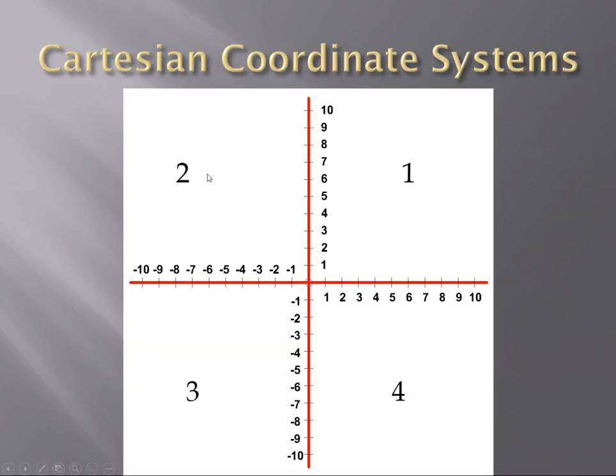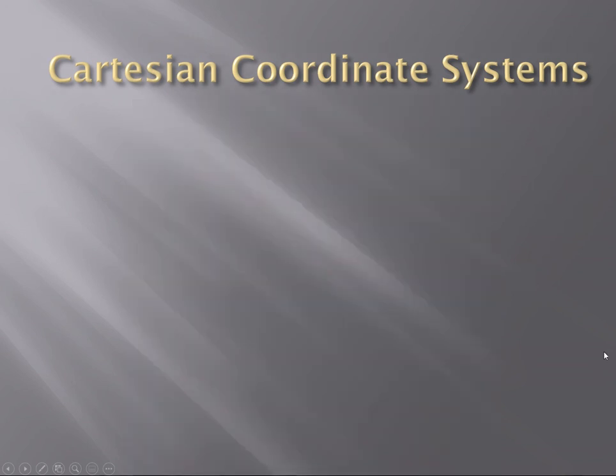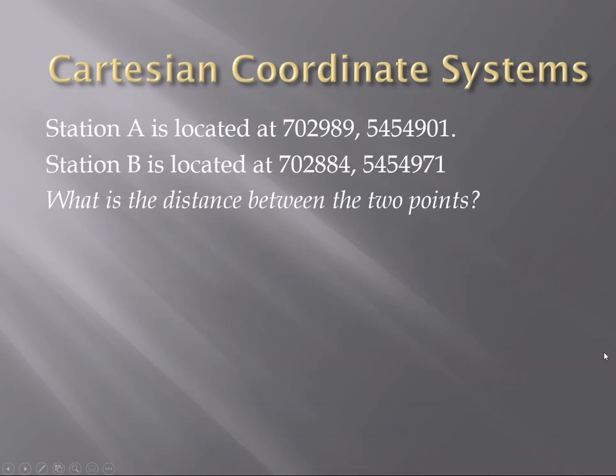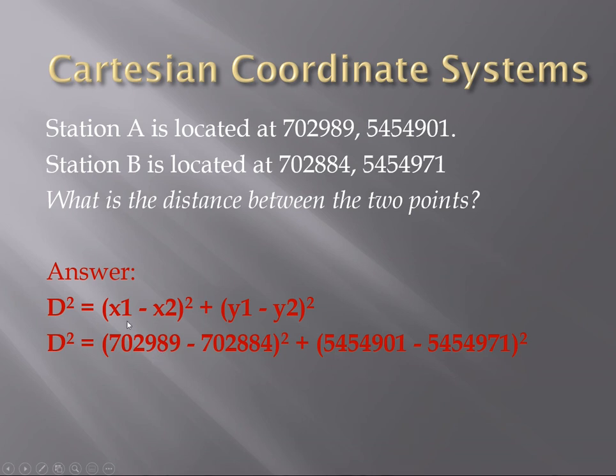So we have quadrants of 1, 2, 3, 4 labeled in such a way. And we have UTM coordinates, so station A, station B coordinates at each point. What is the distance between those points? So we can put it into our formula. We take the difference between x2 and x1, and then the difference between y2 and y1. We square them, and we take the square root of that answer, and we get 126.194 meters.